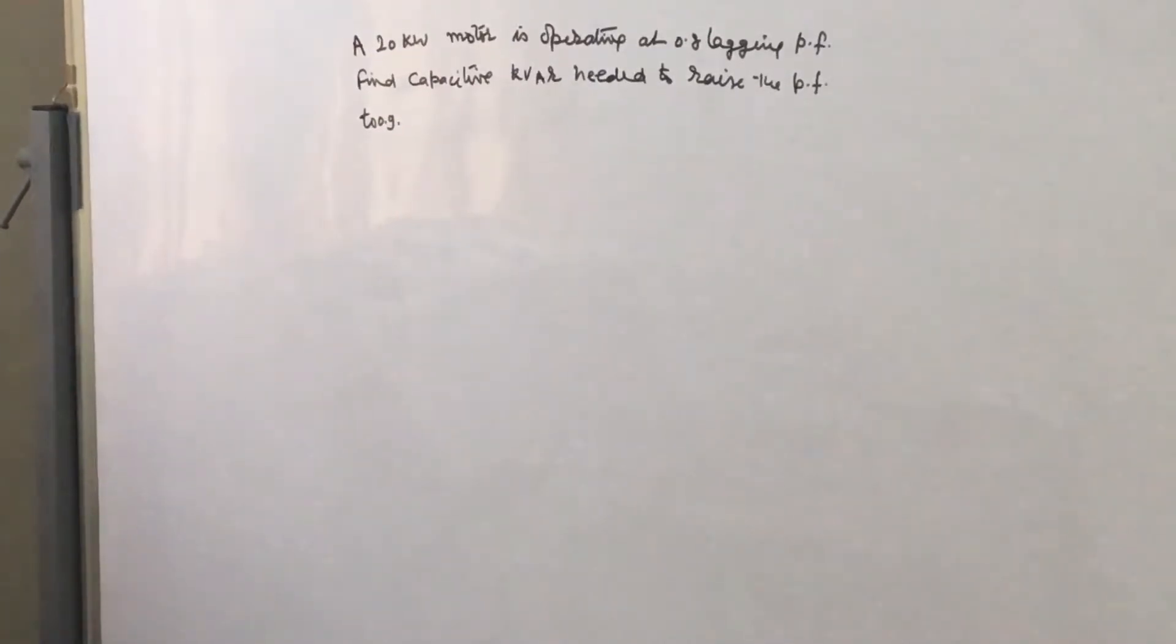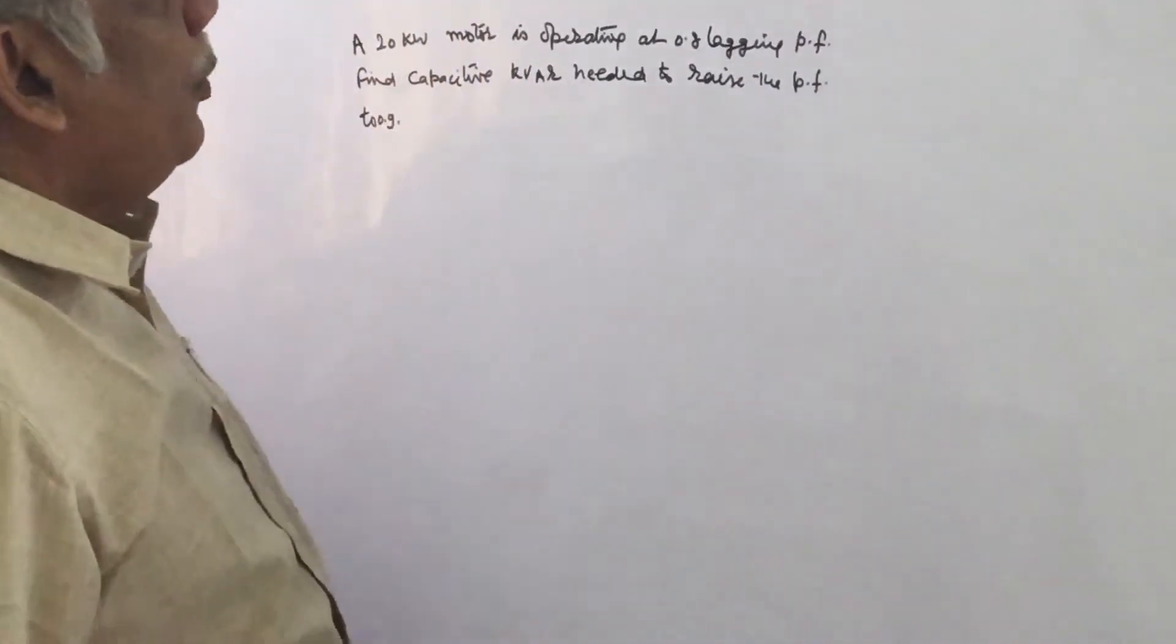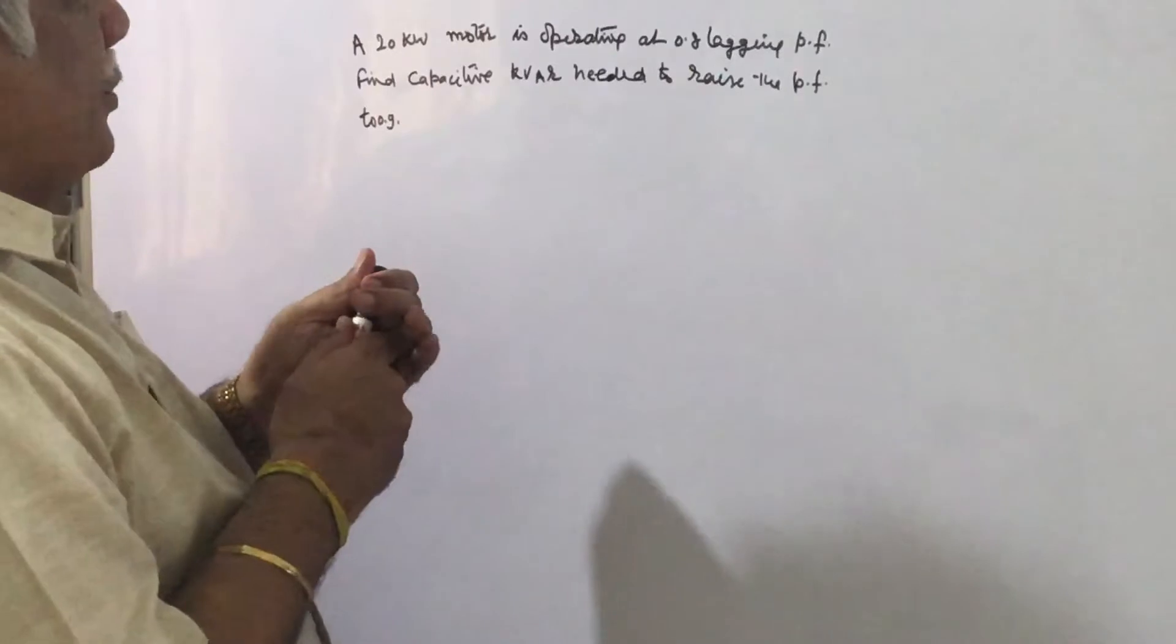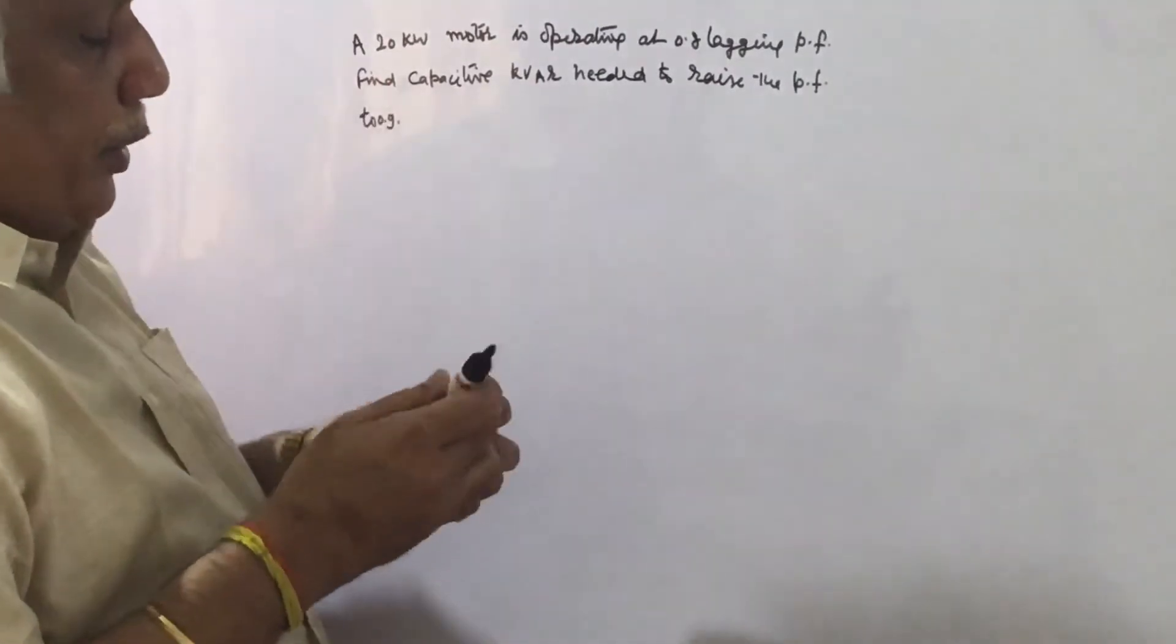Dear friends, welcome to my channel. Today we will solve one problem on finding out the kVAR needed to raise the power factor to a certain higher level. A 20 kilowatt motor is operating at a power factor of 0.8 lagging. Find the capacitor kVAR needed to raise the power factor to 0.9.